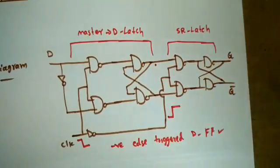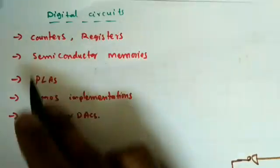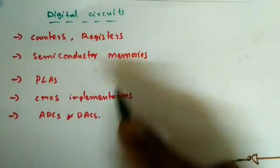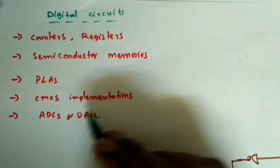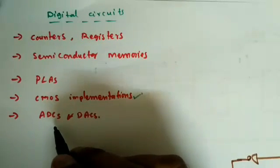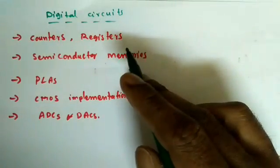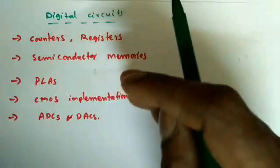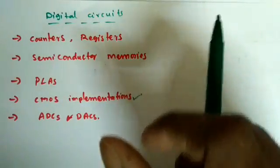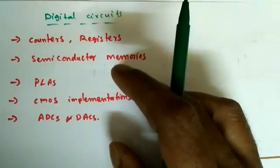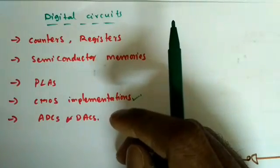If you have any doubts please post a comment. The remaining topics in digital circuits include counters, registers, semiconductor memories, programmable logic arrays, CMOS implementations of logic functions, and analog-to-digital and digital-to-analog converters. I will resume digital circuits after one week; from tomorrow I will start the Electronic Devices course, and will cover both courses in parallel.